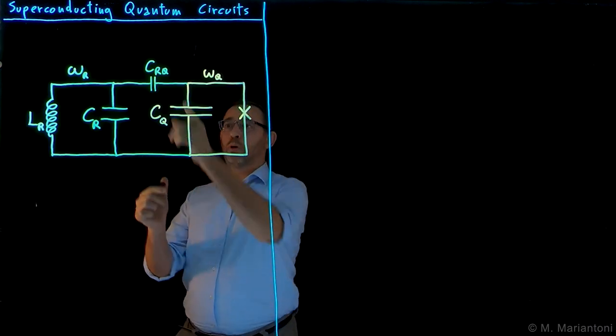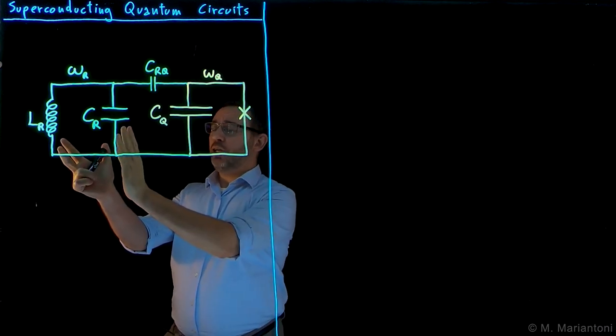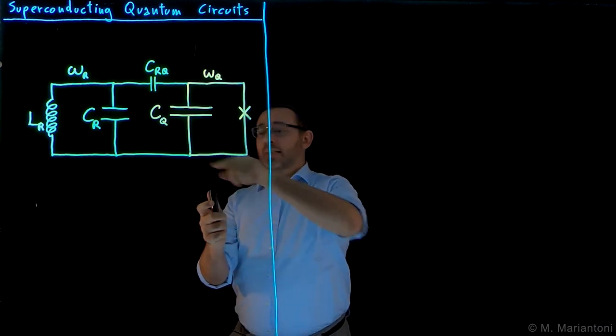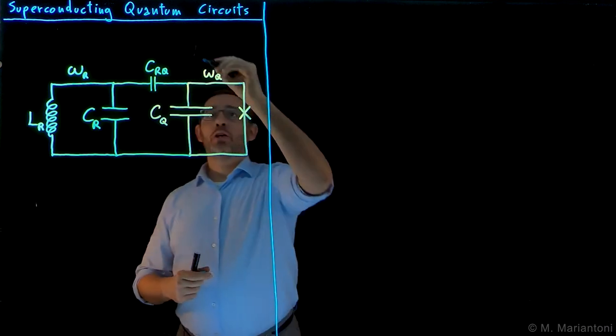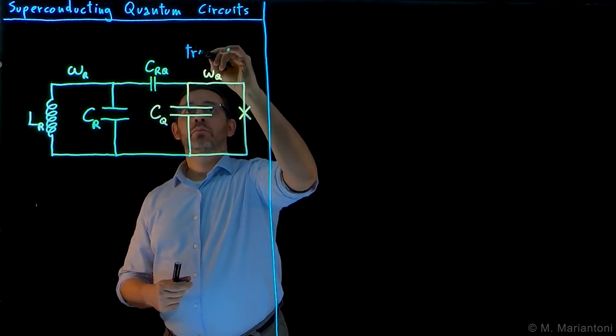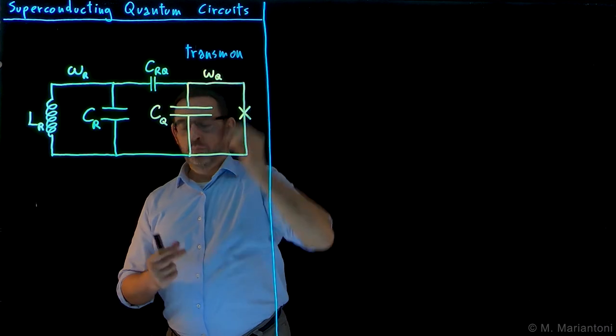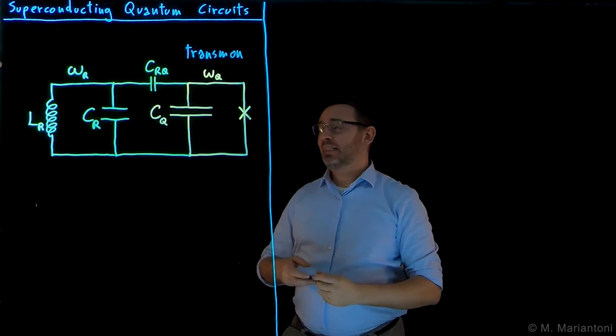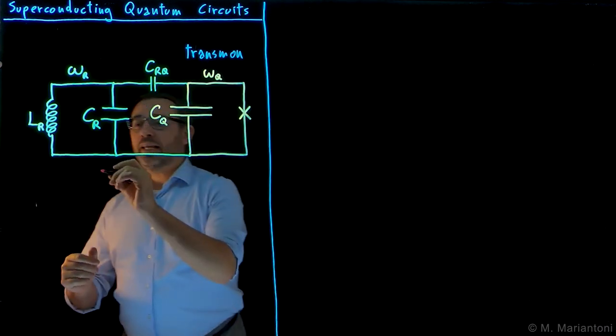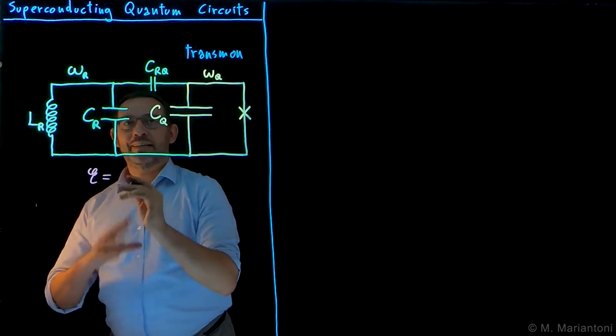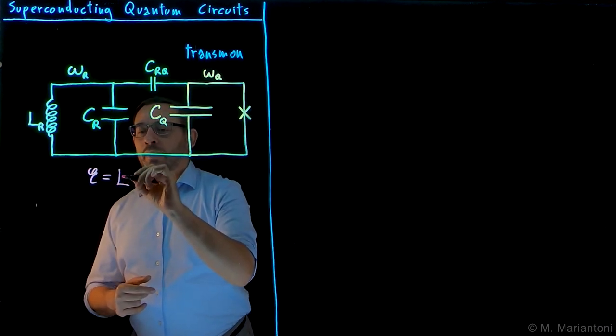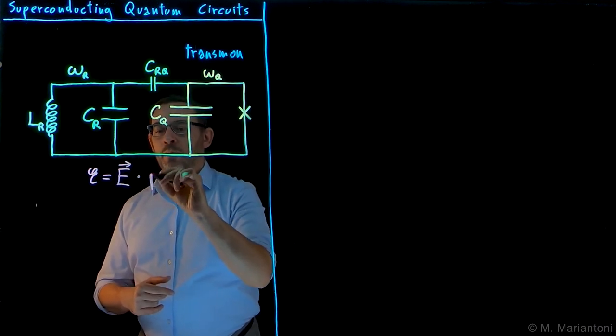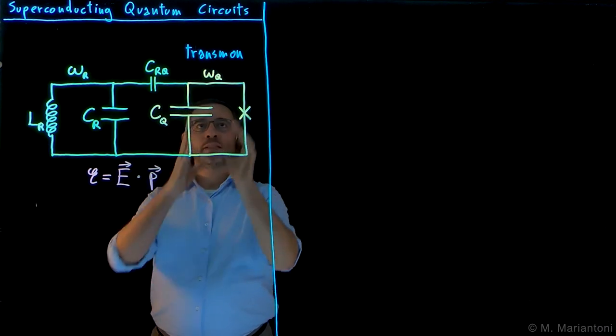Suppose now to couple by means of a coupling capacitor an LC resonator here on the left, with this structure comprised of a parallel connection of a capacitor and the Josephson junction. This structure here is what we call a transmon qubit. It may seem rather complicated to study mathematically the coupling between these two circuit elements. However, classically, the energy representing the coupling between these two objects is given by the electric field associated with the resonator dotted with P, which is the electric dipole moment of the transmon.